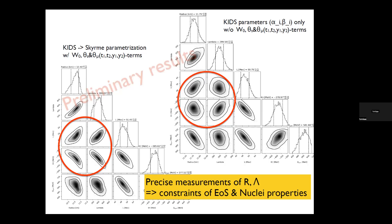I also checked what happens when we ignore some parameters for finite nuclei and use only nuclear matter parameters. Comparing that case to when we include finite nuclei parameters, we can see differences in the mass-radius, lambda-radius, and tidal deformability distributions, as well as in the L and Kτ distributions. In other words, if we precisely measure the radius and tidal deformability, we can constrain L — and this gives constraints on the equation of state and some properties of nuclei.